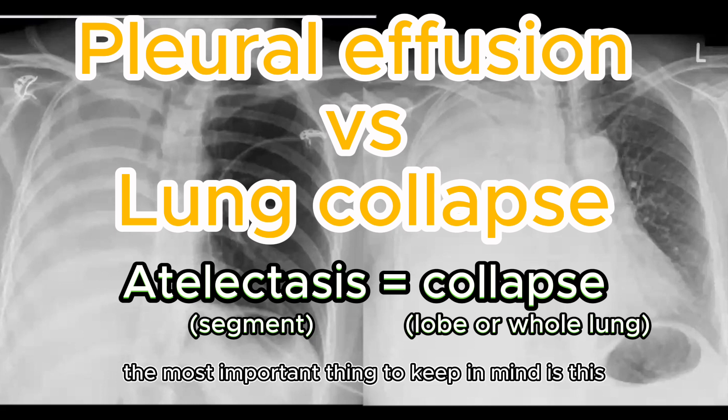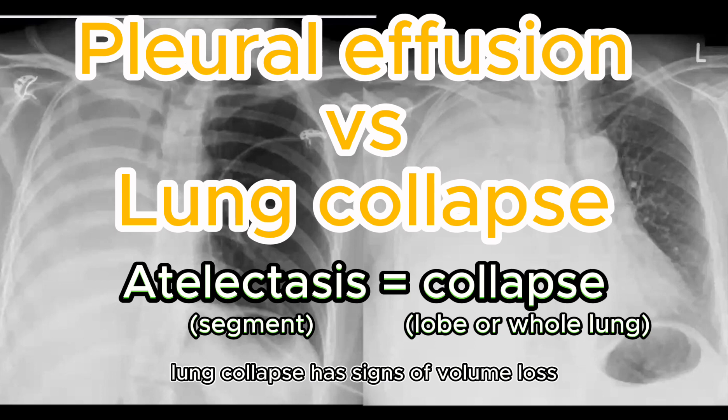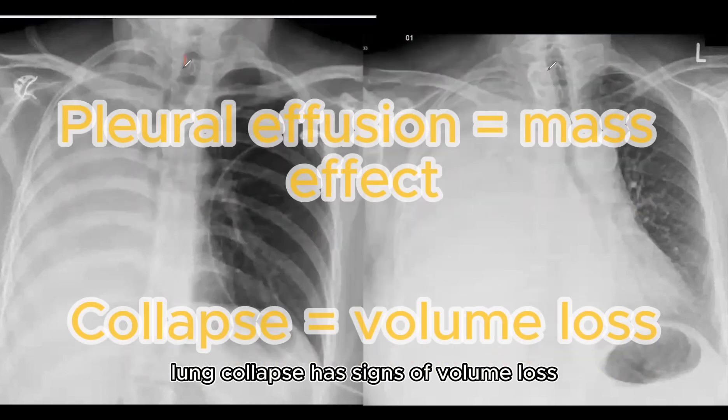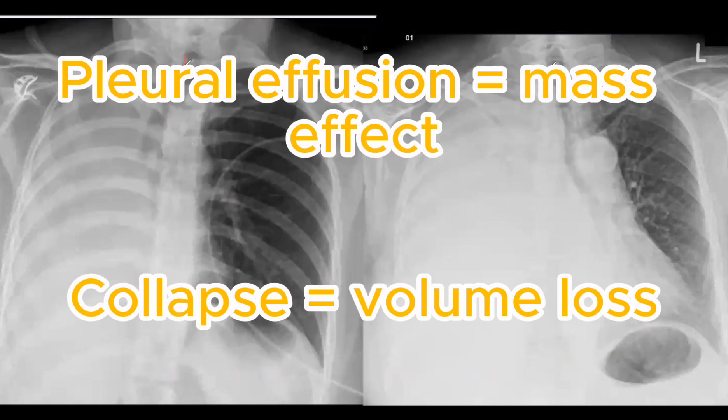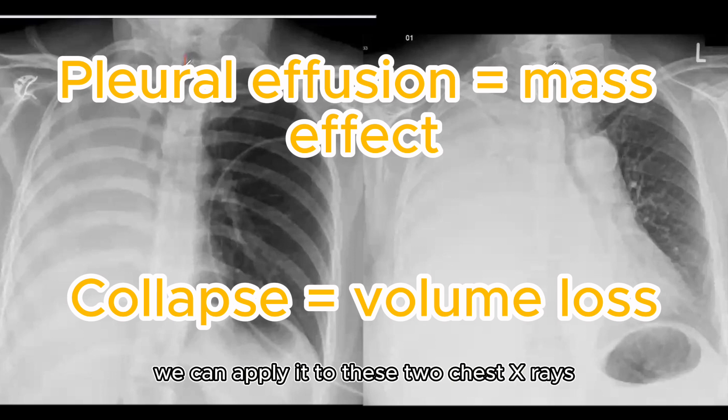The most important thing to keep in mind is this: lung collapse has signs of volume loss, and massive pleural effusion is the opposite. With this principle in mind, we can apply it to these two chest x-rays.